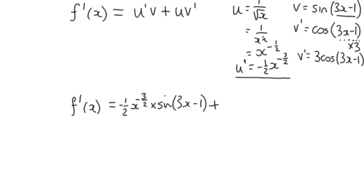Plus, then we've got u and v prime. u is, we can keep it in index form I think, x to negative 1 half, multiplied by v dash or v prime, which is 3 cos 3x minus 1.